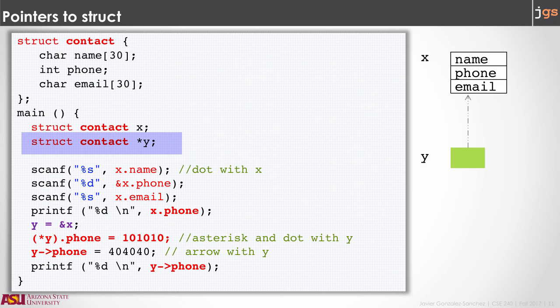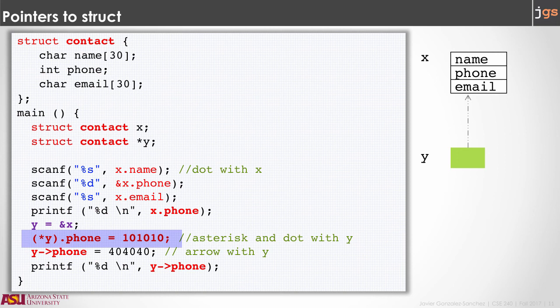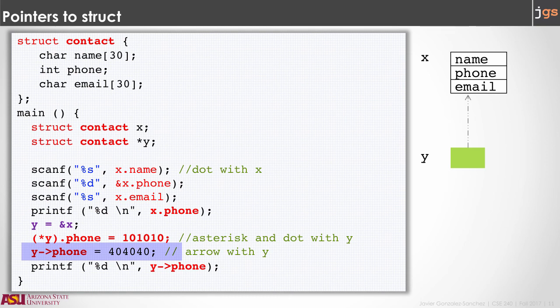Finally, something we can do is create pointers to structs. In order to create a pointer to a struct, you put the asterisk between the type and the name of the variable. In order to access the data in the struct, you use the asterisk and then the dot and the name of the variable inside the struct. However, an equivalent notation is the use of the arrow. When you have a pointer to a struct, you can replace the asterisk and the dot with a minus and a greater-than symbol, which together represent this arrow. So you can use the pointer, the arrow, and the name of the variable in the struct.